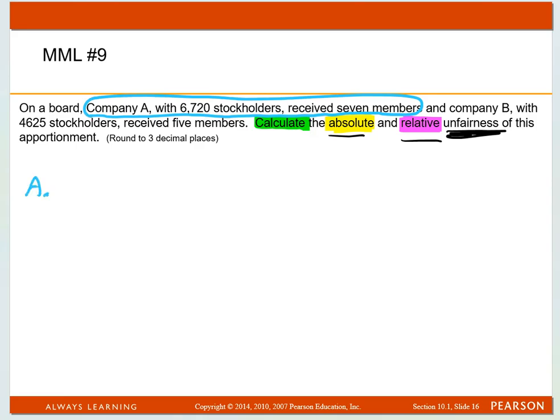So the AC, the average constituency of Company A, will be 6,720 divided by seven members, and when I do that I get 960. And then you have to do Company B with 4,625 stockholders, and they received five members.